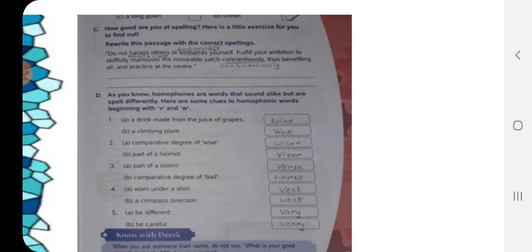Here are some clues to homophonic words beginning with V and W. We are going to complete these words out here with V and W. They begin with V and W and they sound almost same but their spellings are different.